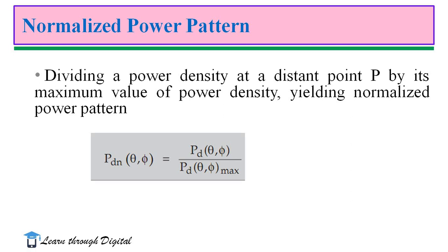Similarly, for the normalized power pattern: dividing the power density at a distant point P by its maximum value of power density yields the normalized power pattern. The normalized power pattern P_dn(theta, phi) is equal to the power density at the distant point divided by the maximum value of power density.